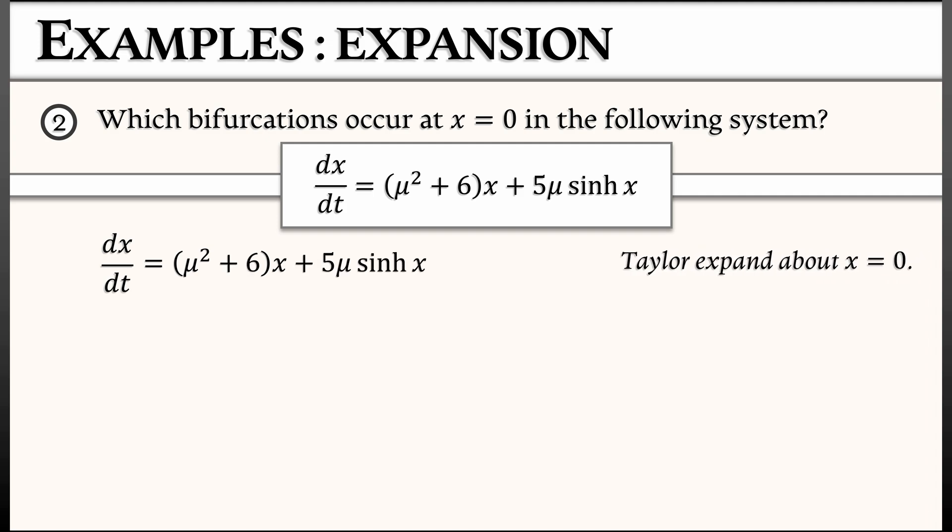That first term on the right-hand side, it's polynomial. So the Taylor expansion of that is just mu squared plus 6 times x. Then I take 5 times mu and I multiply that by the Taylor series for hyperbolic sine. That's going to be x plus x cubed over 3 factorial plus terms of order x to the fifth and higher.